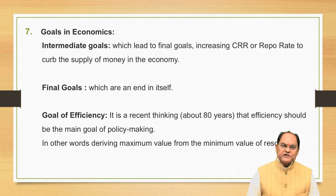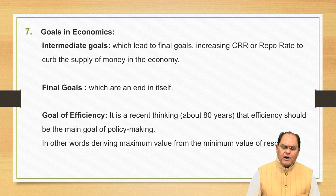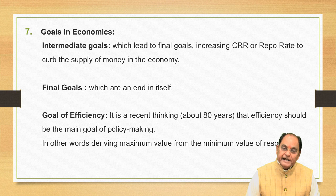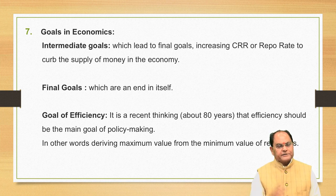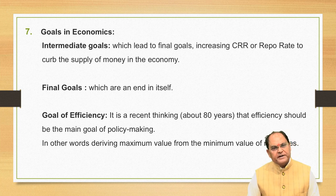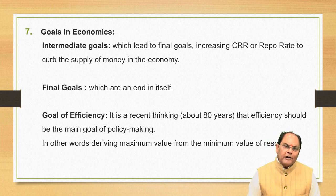The goal of efficiency tells us that an individual, a household, a firm, or a nation has to take the maximum output with the help of minimum inputs. As inputs go on increasing, the cost of production also increases. So with the help of minimum inputs, the maximum output is to be obtained. This is the goal of efficiency.